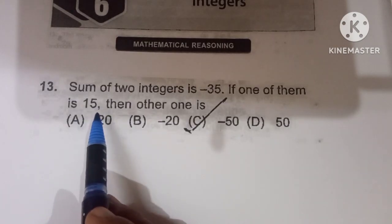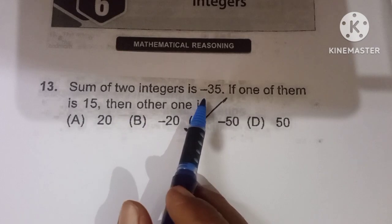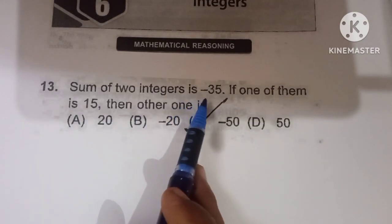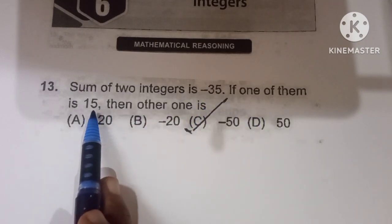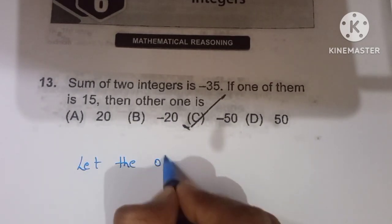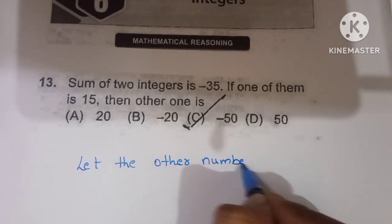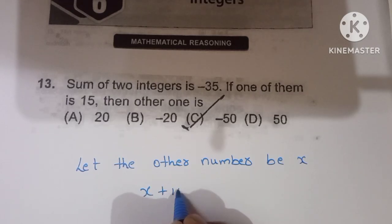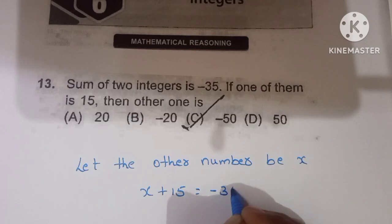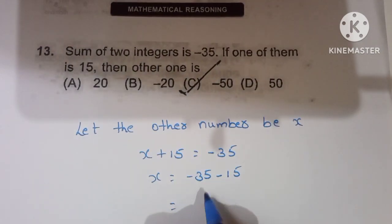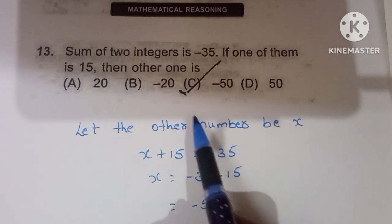Thirteenth question: the sum of two integers is minus 35. If one of them is 15, find the other. Let the unknown number be x. Then x plus 15 equals minus 35. Transposing 15, x equals minus 35 minus 15, which is minus 50. So option C is the correct one.